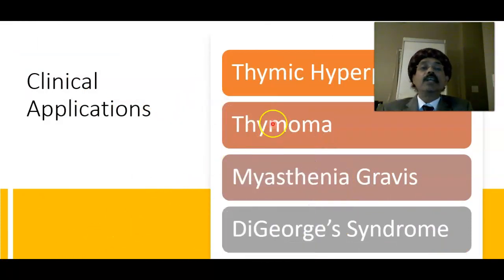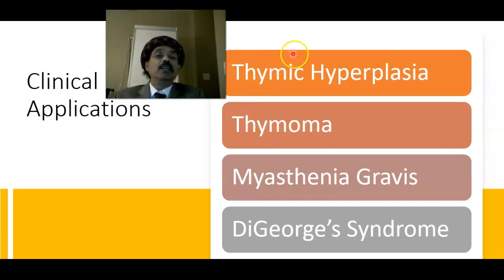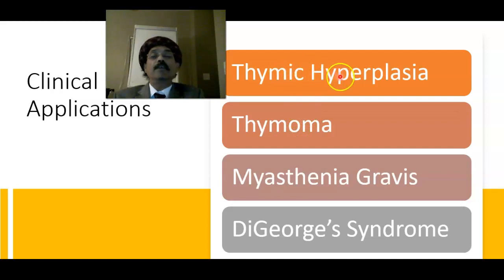Now for some clinical applications. Thymic hyperplasia and thymoma may occur. Thymoma is a tumor of the thymus gland — it may be benign or malignant. In both conditions there will be myasthenia gravis. Myasthenia gravis is found in patients who have thymoma, whether benign or malignant, or even thymic hyperplasia.